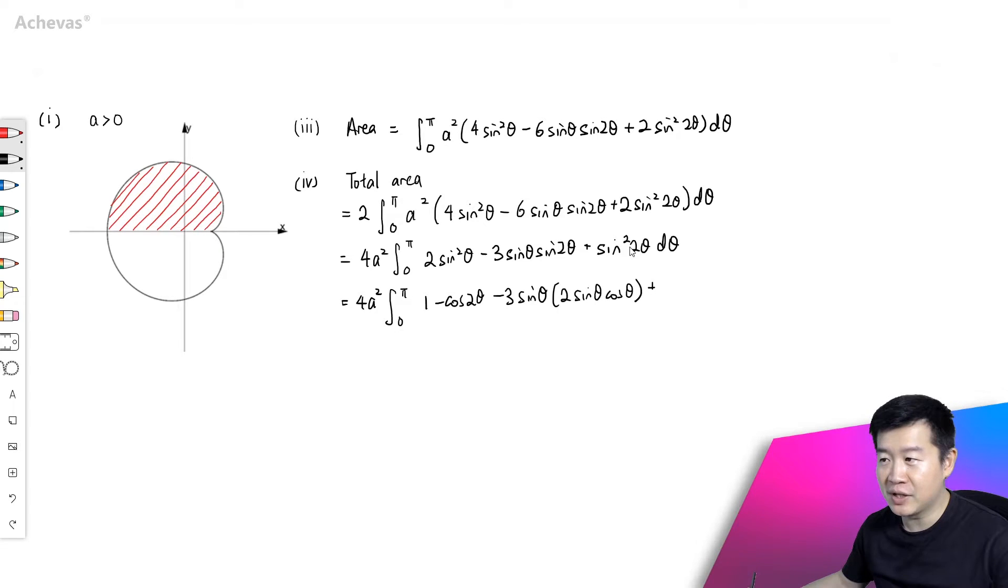Then plus applying the same thing to this trigonometric identity, this will be 1 minus cosine 4θ divided by 2, dθ.